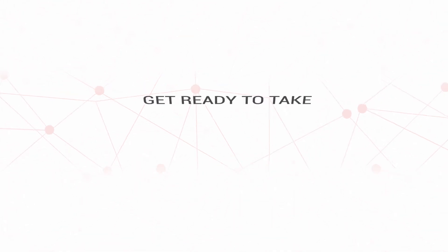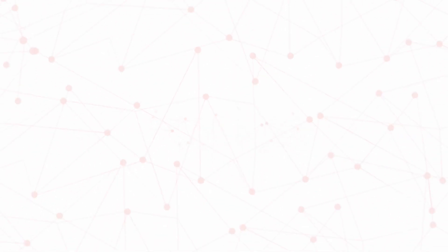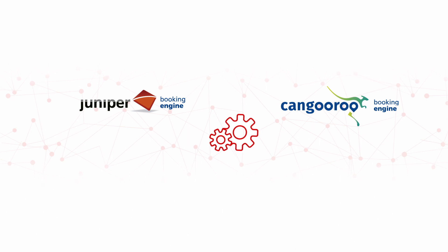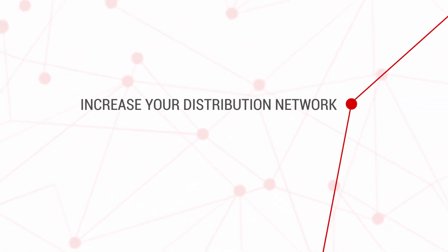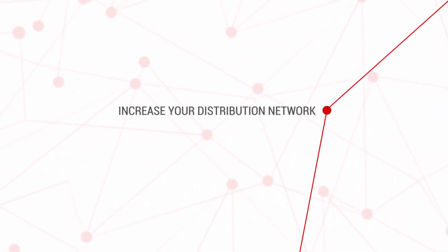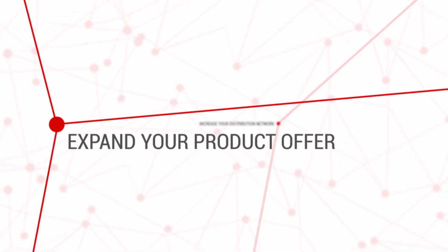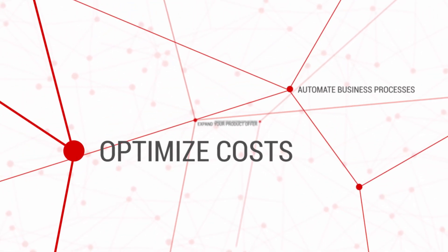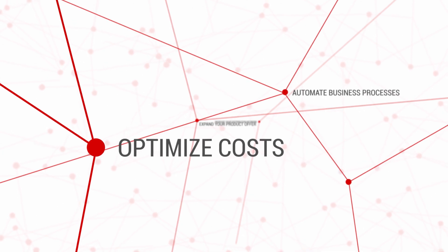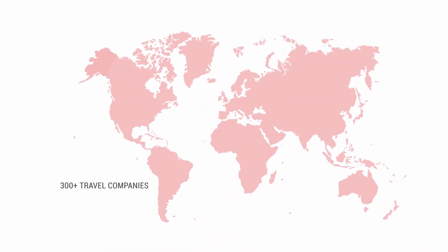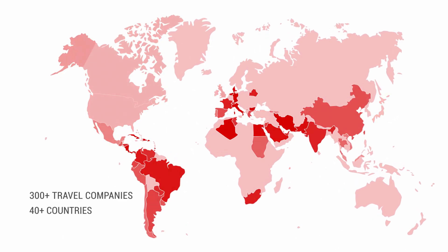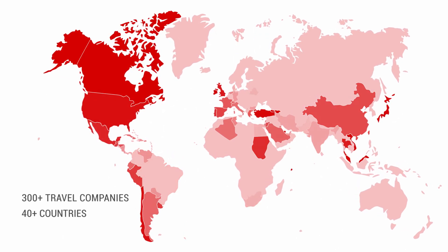Get ready to take the technological leap. Use the Juniper and Kangaroo booking engines to increase your distribution network, reaching thousands of new clients, expand your product offer beyond limit and automating many business processes, thus optimizing costs. More than 300 travel companies in 40 countries rely on Juniper, a leader in technology and XML connectivity.